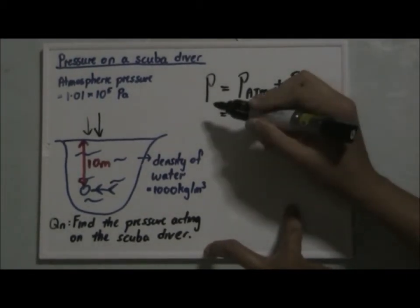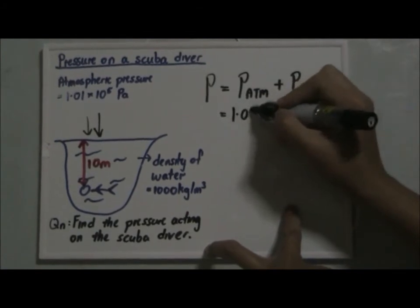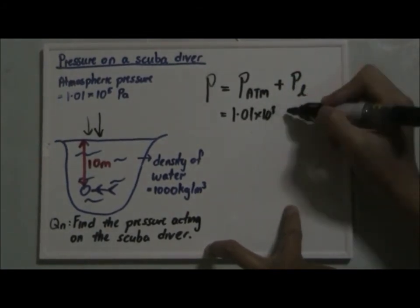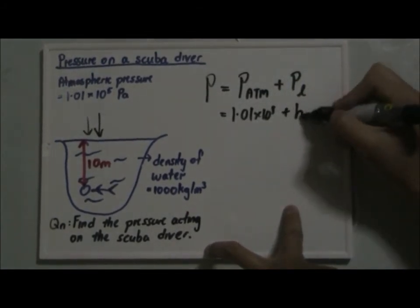So the pressure of the atmosphere is 1.01 times 10 to the power of 5, and the pressure of the liquid is hρg.